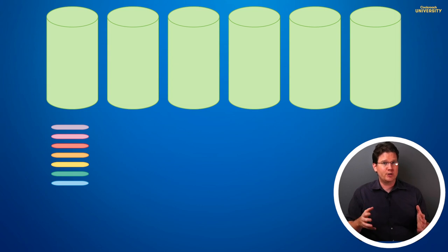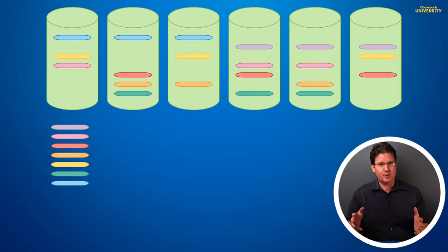Here's a visualization showing some data getting divided up into seven ranges, represented by flat ovals, and six nodes for our cluster, represented by the cylinders. Multiple copies of each range, called replicas, are distributed among the nodes to keep the cluster balanced. In CockroachDB, the default replication factor is three, and that's what we see here. Three replicas of each range.